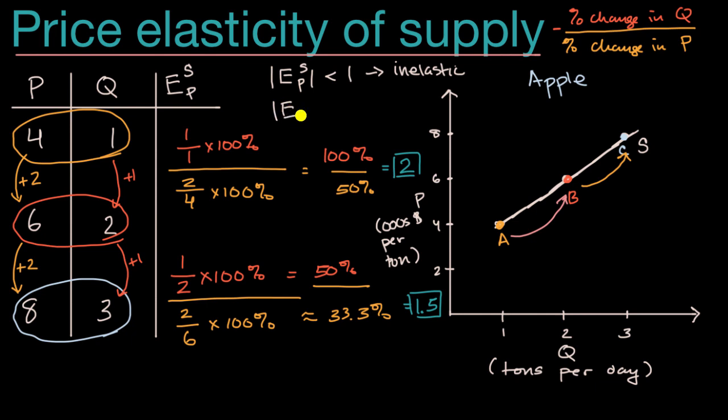Now, if our price elasticity of supply is greater than one, that's generally considered to be elastic. For a given percent change in price, you're getting a larger than that percent change in quantity supplied.